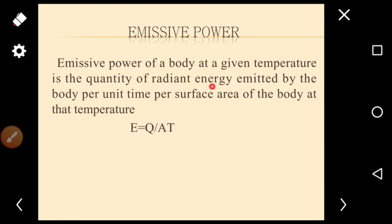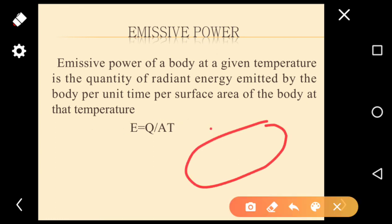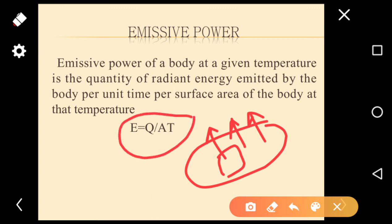Emissive power: the emissive power of a body at a given temperature is the quantity of radiant energy emitted by the body per unit time per unit surface area at that temperature. Mathematically, e = Q / (A × t), where Q is the radiant energy (heat), A is the surface area, and t is the time.